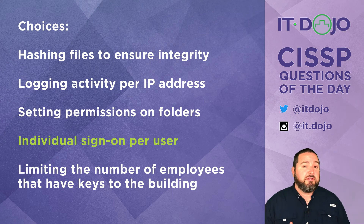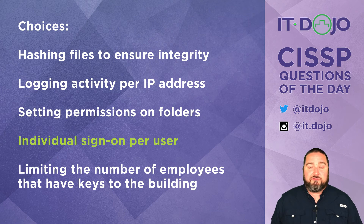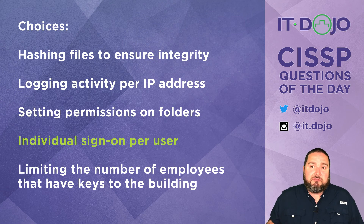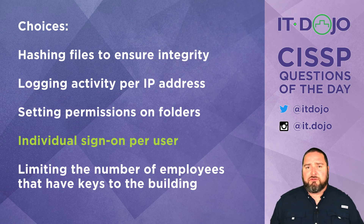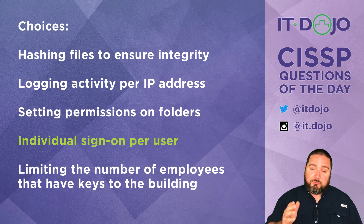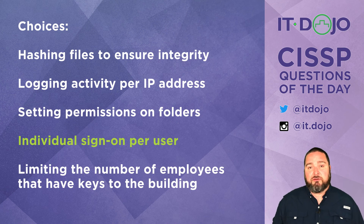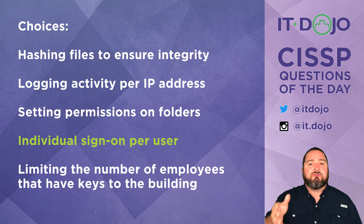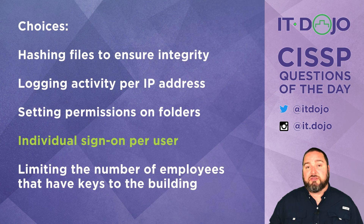The final choice was limiting the number of people who have physical keys to a building. If 10 people have keys, that doesn't give you individual accountability — you still can't determine who didn't lock the door or who unlocked it. So the best answer is individual sign-on per user. There may be a time and place for shared credentials in some scenarios — there's a link below that discusses situations where that might occur — but individualized user accounts is the most appropriate solution when seeking user-based individual accountability.